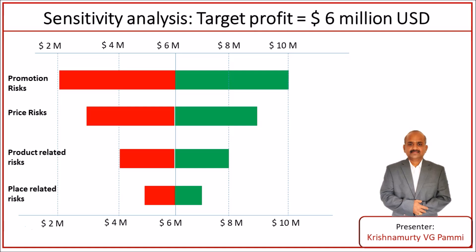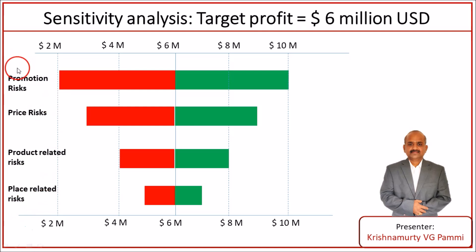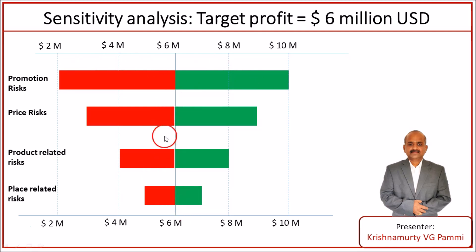Sensitivity analysis uses a Tornado Diagram. This is a Tornado Diagram, where all marketing related risks are listed. For each risk we focus upon, we keep all other risks at their base level, and we see how maximum and how minimum the risk can impact our project objectives.